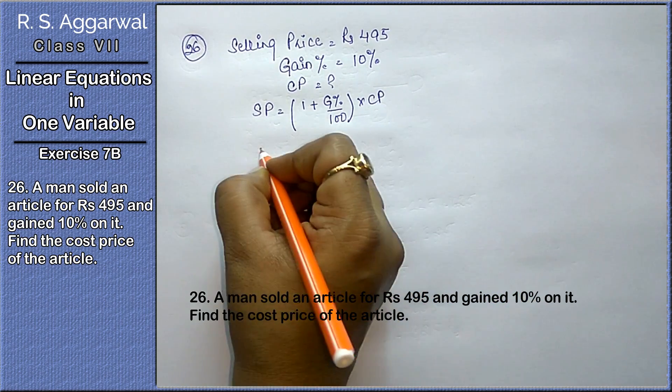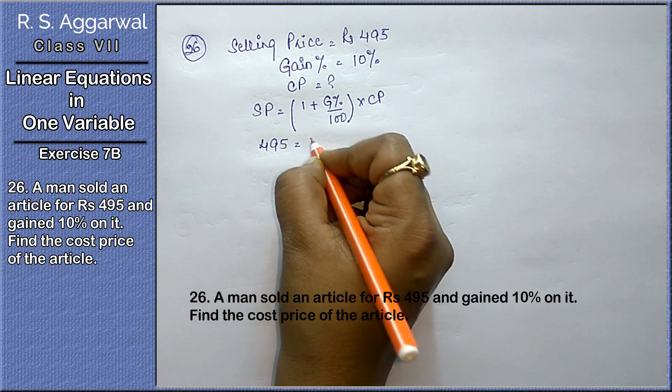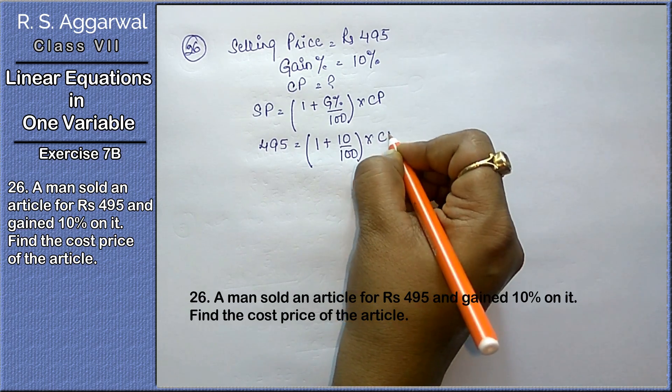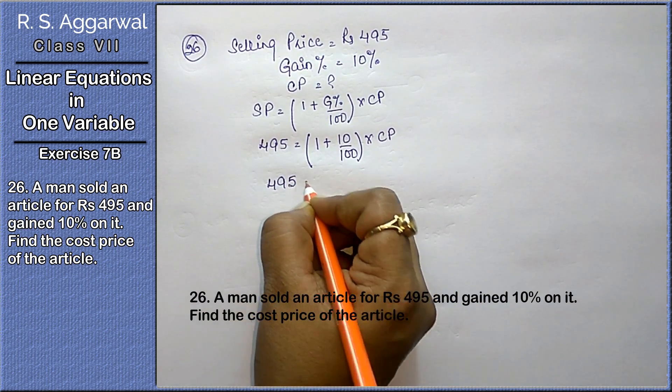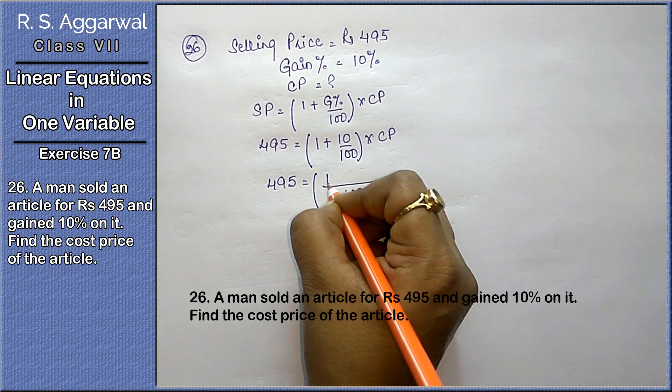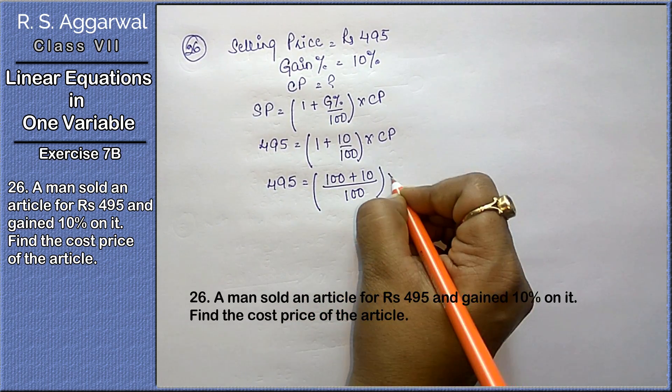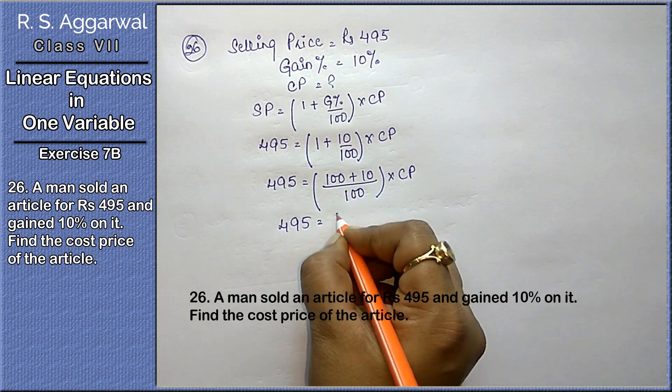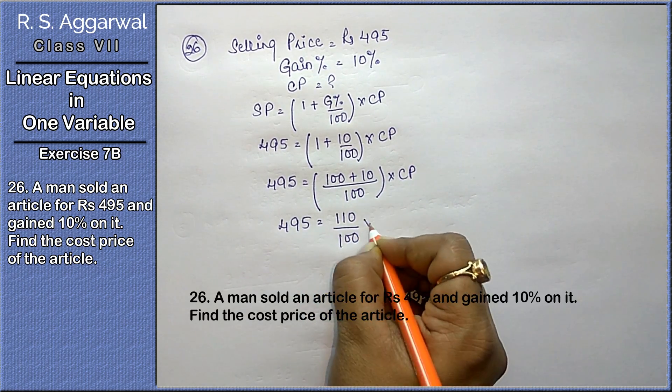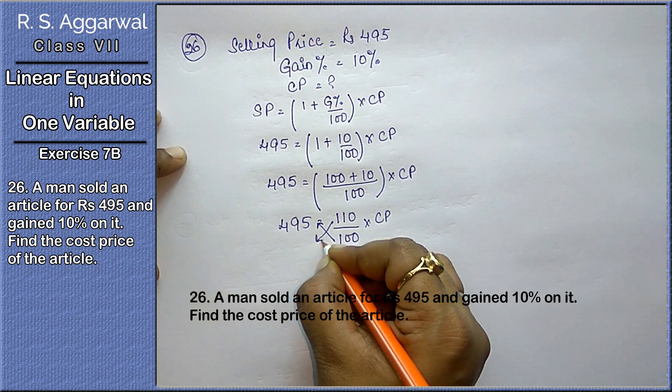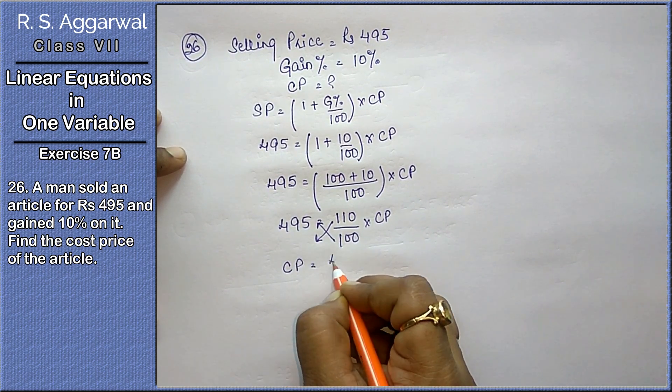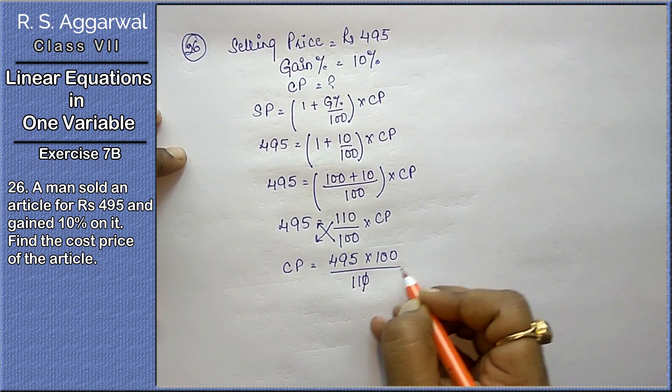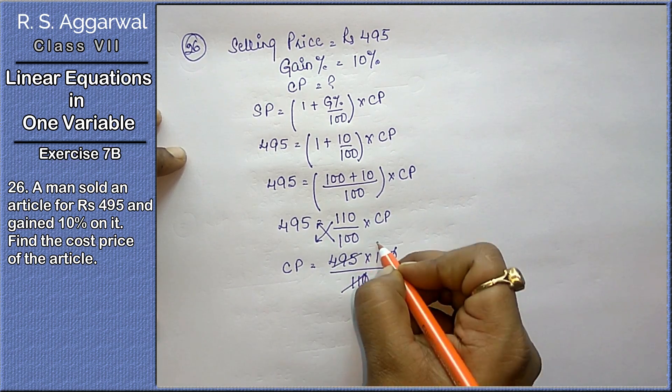Now we will put the values. 495 equals to (1 plus 10 upon 100) into CP. That becomes 495 equals to 110 upon 100 into CP. Now CP equals to 495 into 100 divided by 110. Simplifying, we get 450 is the cost price.